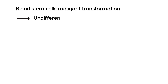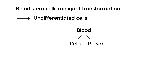Essentially, these undifferentiated cells have not been able to mature into the blood cells that you normally want — red blood cells, white blood cells, and platelets. So before we get into ALL, let's talk a little bit about blood. Blood essentially has cells, also known as formed elements, and then the plasma part. The cells can be broken into three categories: red blood cells, white blood cells, and platelets.